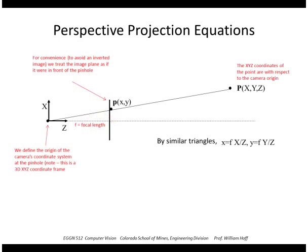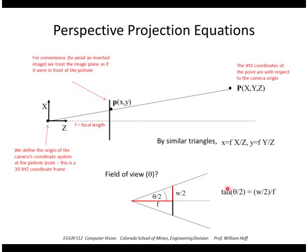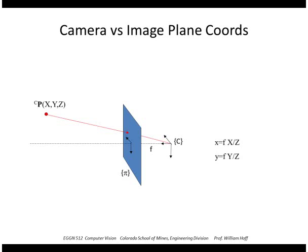And the same thing would be true for the Y, which would be coming like out of the plane here. Okay, we can also calculate the field of view of this little system by looking at what would be the largest span of rays that could be imaged. So if I take the maximum width of this image plane, W, half of that is W over 2. So the angle of this little triangle is theta over 2. And I can write the tangent of that, tangent of theta over 2, is just W over 2 over F. So that would give me the angle theta.